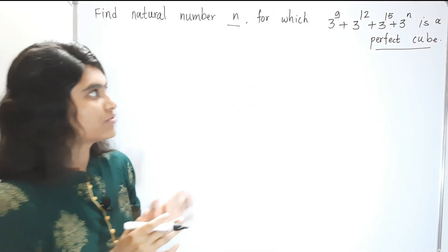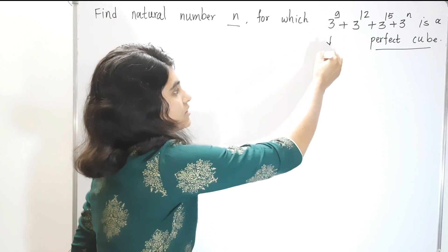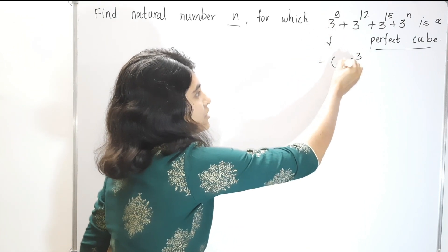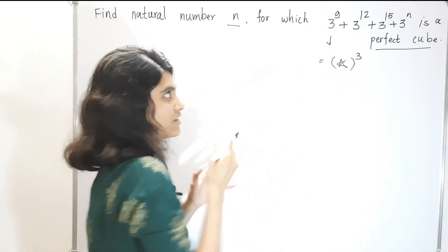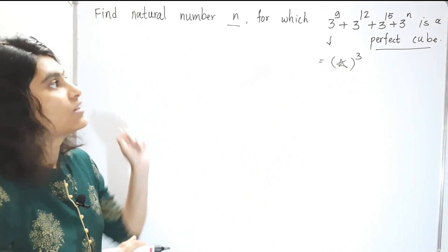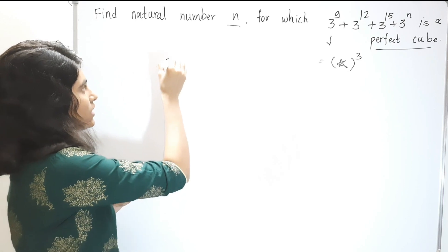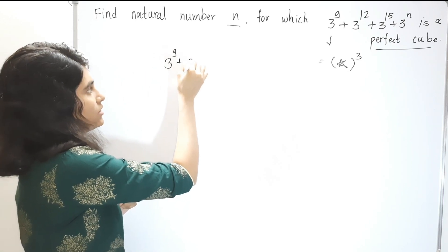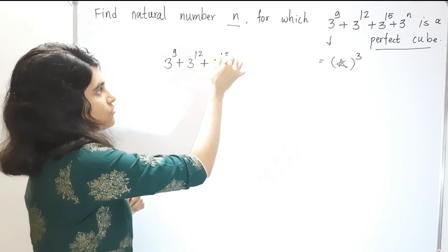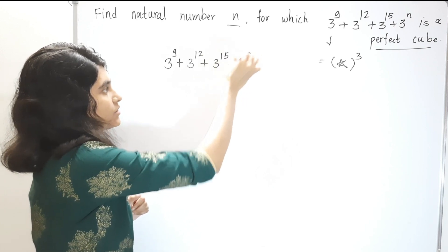What is the meaning of that? We must write this number as a cube of some number. So how to proceed? We can write this number starting with 3^9, and our given number is 3^9 + 3^12 + 3^15 + 3^n.